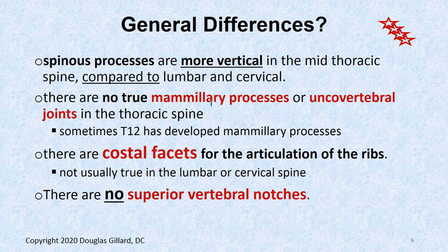General differences: spinous processes are more vertical, especially in the mid-thoracic spine. The upper thoracic starts to become more horizontal, same with the lower thoracic, but T6, T7, T8 are really, really vertical. There are no mammillary processes or accessory processes per se — T12 does have some rudimentary ones. Mammillary processes are only in the lumbar spine normally.